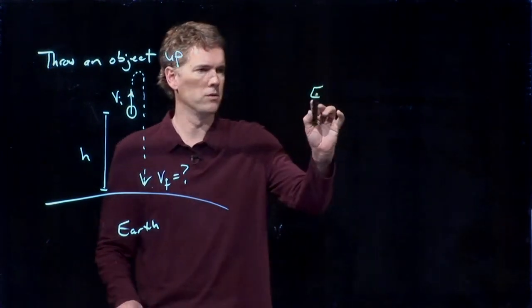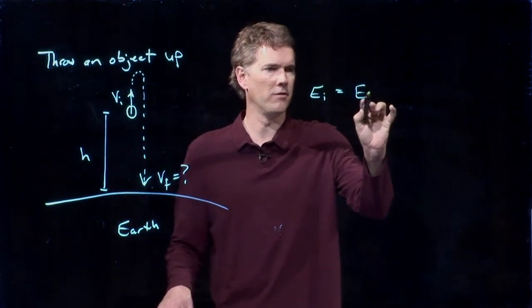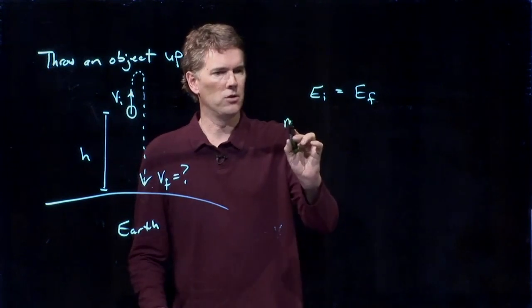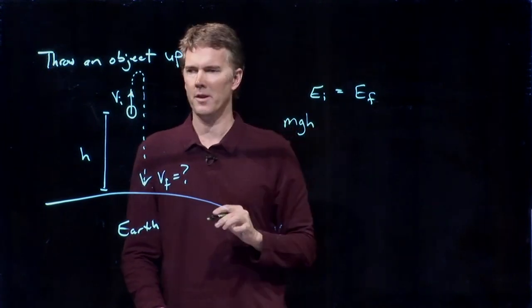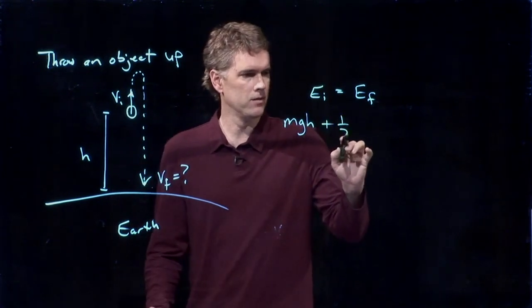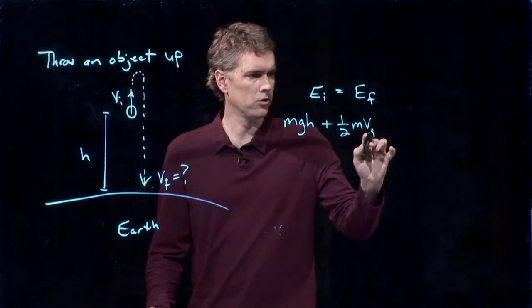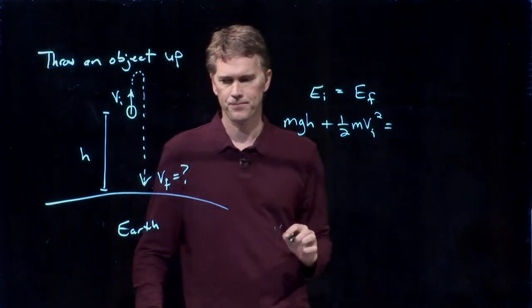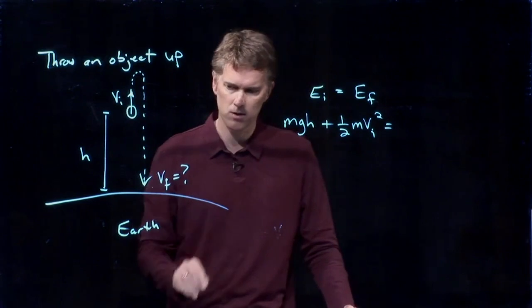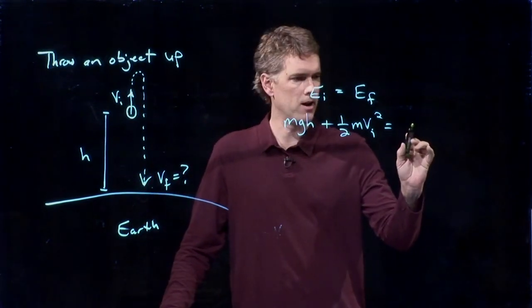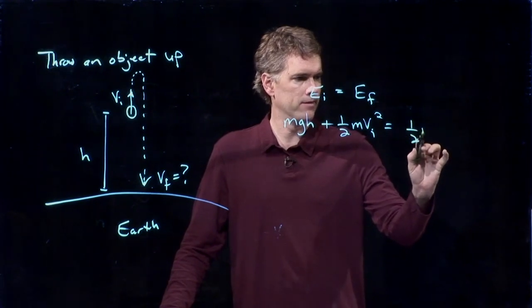Energy initial equals energy final. We're up here at a height h, so we've got potential energy of mgh. We threw it at speed Vi, and so we have initial kinetic energy of one half m Vi squared. When it comes back down, we don't have any more potential energy because we're down at the ground. But we do have kinetic energy.